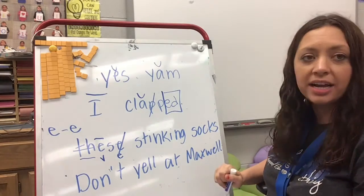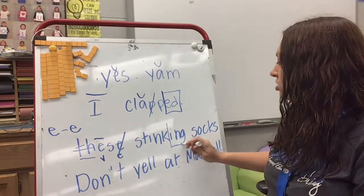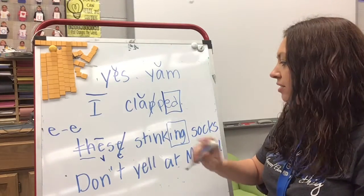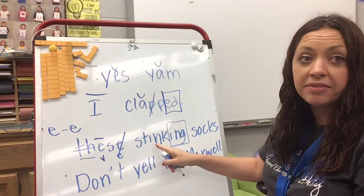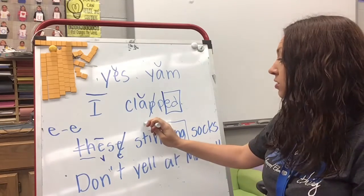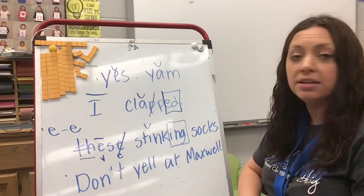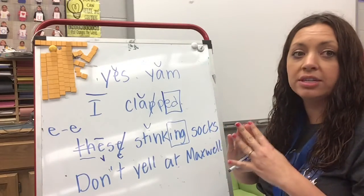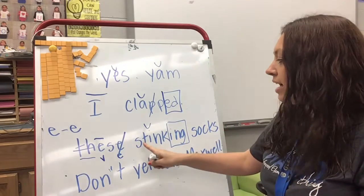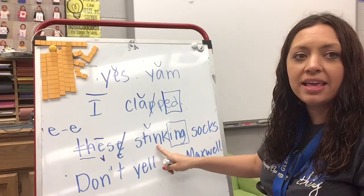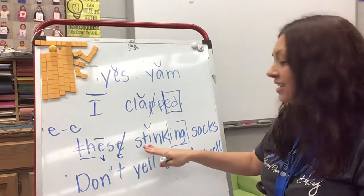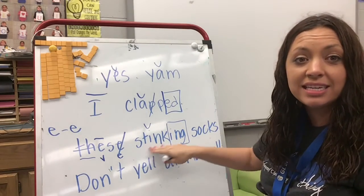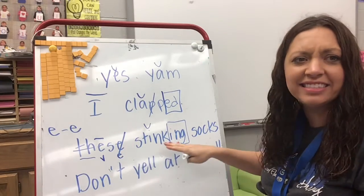On this word, I see that I have I-N-G, so I'm going to box off that suffix. My vowel is in front of an N and I know N is a consonant, so it's going to be short. And that S-T I know I can blend together and say st. So I have st-ink: stink. And remember the I-N-G says ing. So stinking. These stinking.